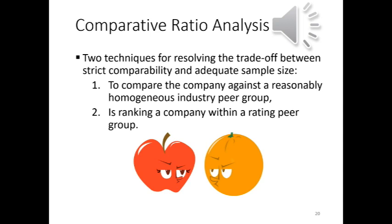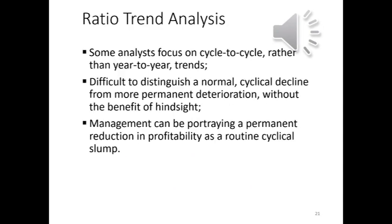To compare a company's ratios with those of a peer group, we use two techniques for resolving the trade-off between strict comparability and adequate sample size. The first technique is to compare the company against a reasonably homogeneous industry peer group. The second technique is ranking a company within a rating peer group, which can include a variety of industries within a broadly defined economic sector. In evaluating the long-range creditworthiness of cyclical companies, some analysts focus on cycle-to-cycle rather than year-to-year trends. It can be difficult to distinguish a normal cyclical decline from a more permanent deterioration — without the benefit of hindsight, management can be portraying a permanent reduction in profitability as a routine cyclical slump.